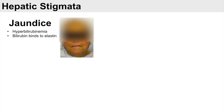Jaundice is due to hyperbilirubinemia. Bilirubin is a breakdown product of heme catabolism, and normally the liver deals with the bilirubin and will excrete it in bile. But if the liver is not functioning properly, bilirubin can start to accumulate, leading to hyperbilirubinemia. Bilirubin tends to bind to elastin, which is found in our skin, and that's why we get this yellowish hue in our skin.